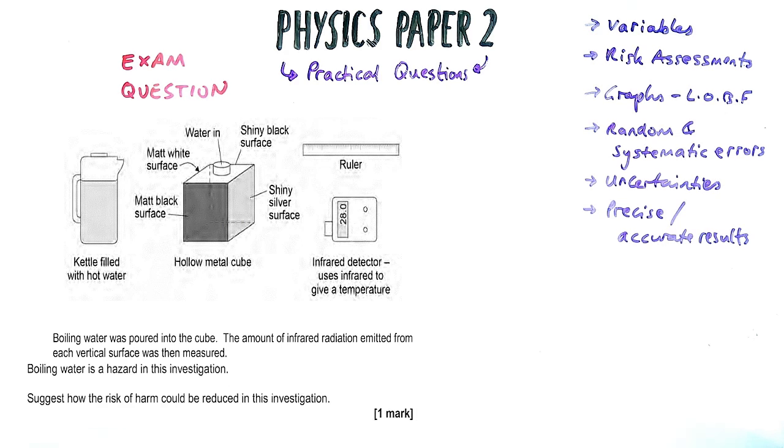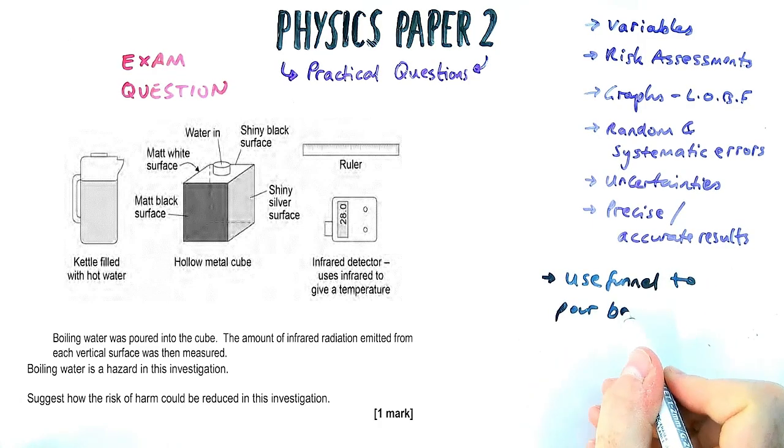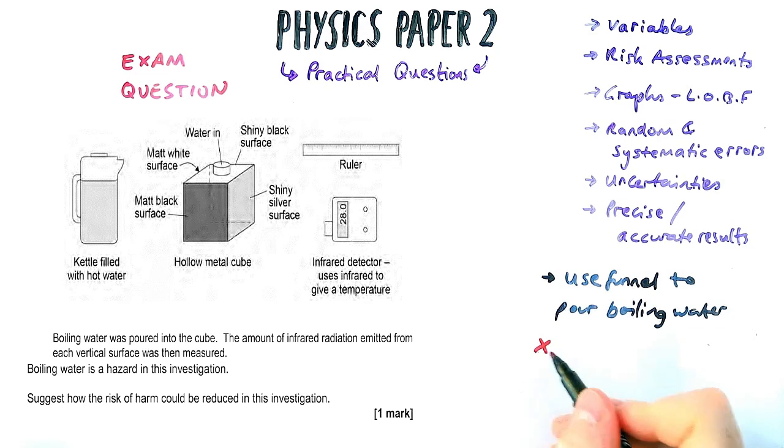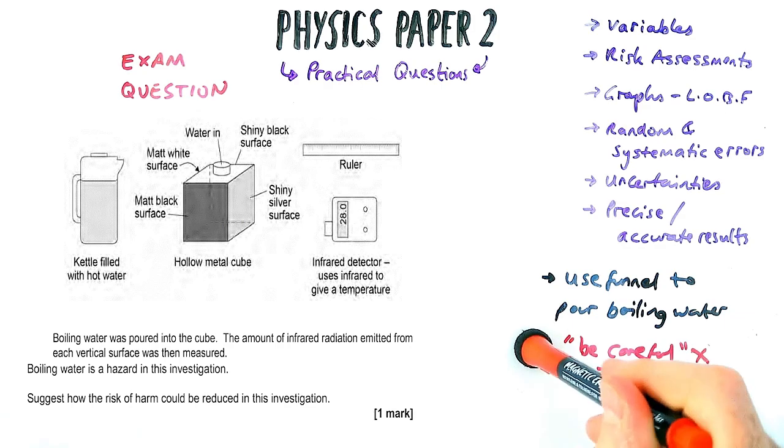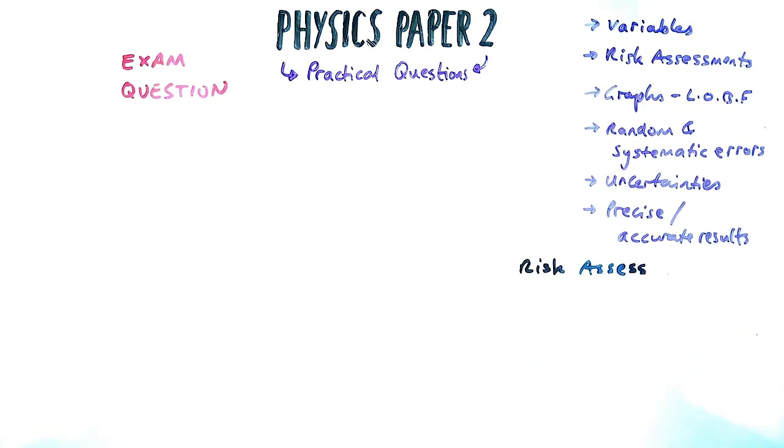Also in this question we're asked to talk about a safety matter, and this question says suggest how the risk of harm could be reduced. So we could say something like use a funnel to pour boiling water. Notice I didn't say something like be careful, because you're kind of assuming you're doing that in an experiment, it's not specific enough. And you can't say don't burn, you can't say don't pour on your skin, you've got to say how do you stop that happening.